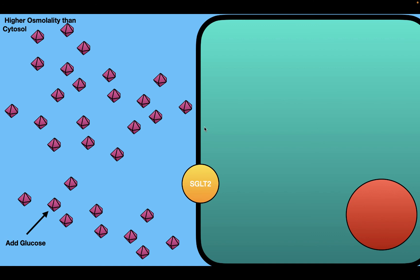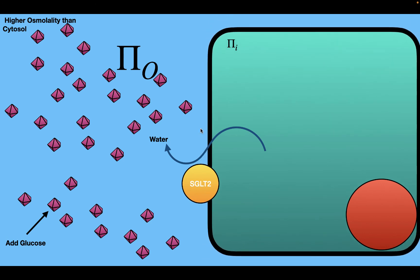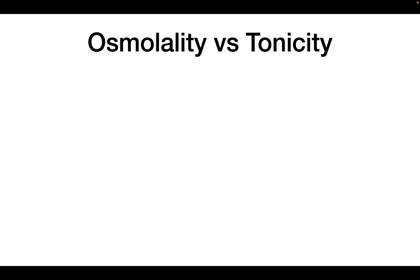As a result, the osmotic pressure outside the cell is greater than inside, so water will move from inside the cell to the outside, causing the cell to shrink. From these two different types of solutes, we get two different terms: osmolality and tonicity.